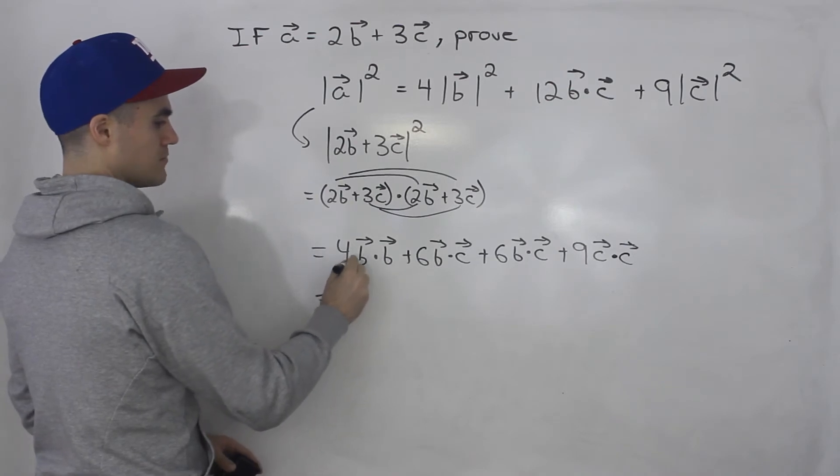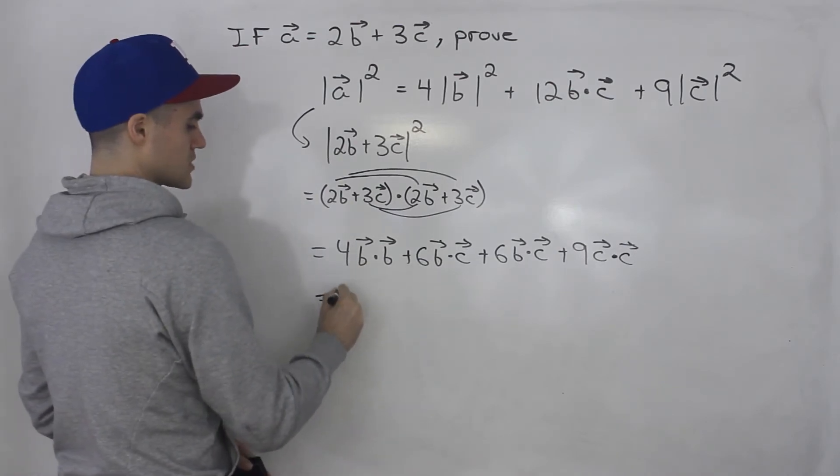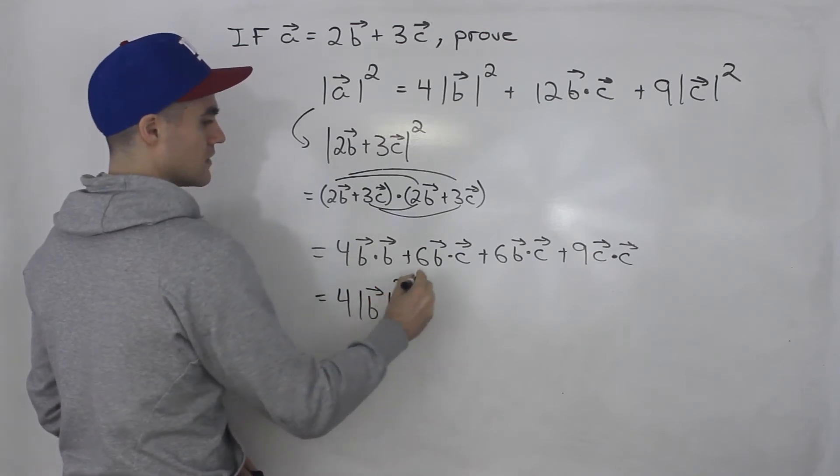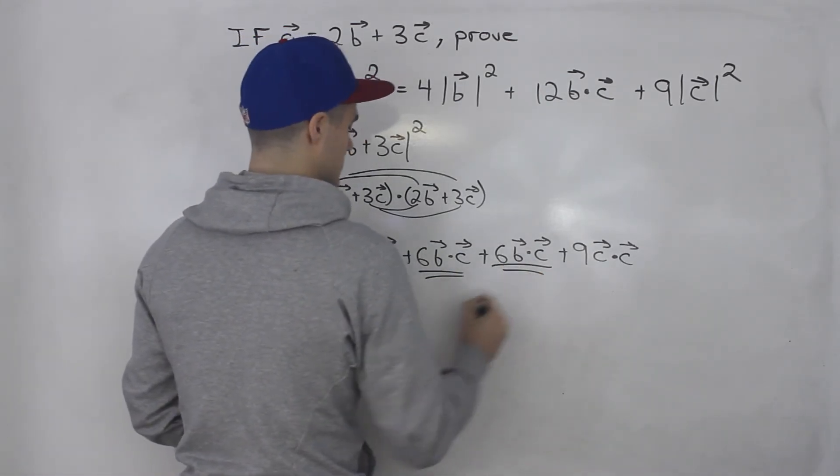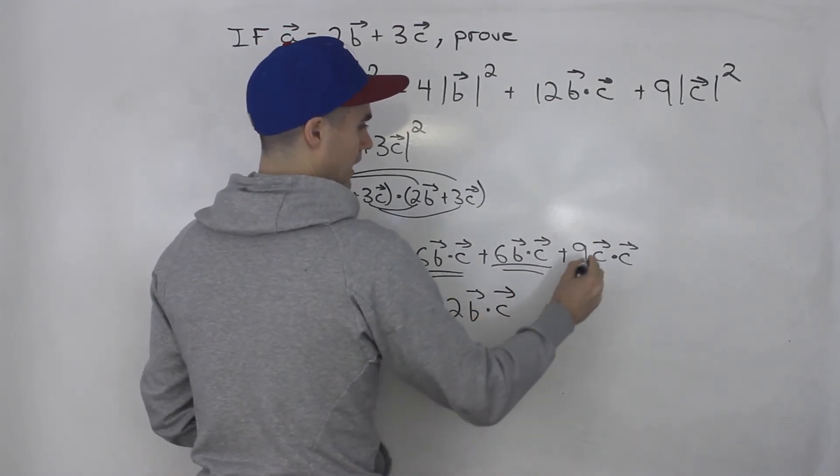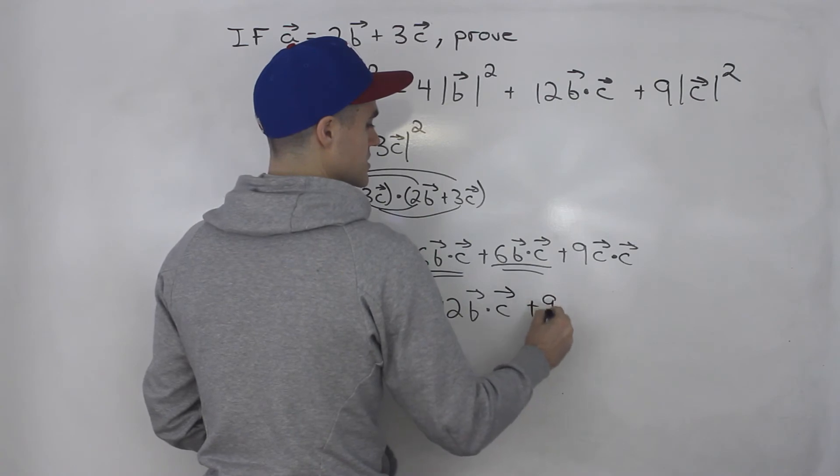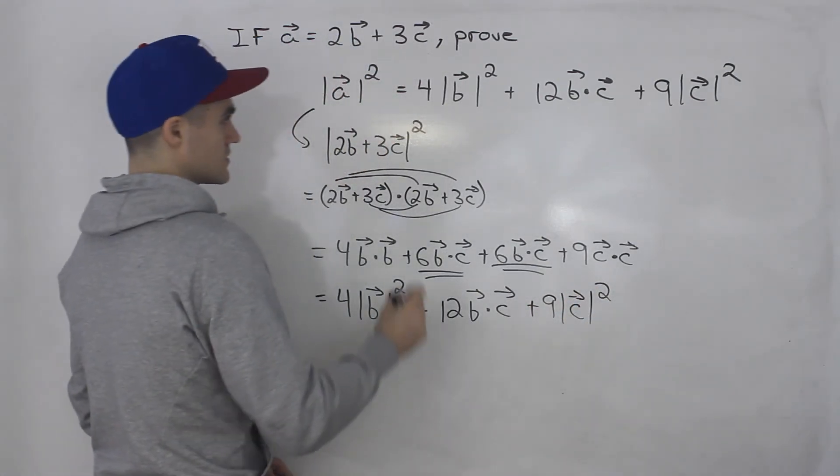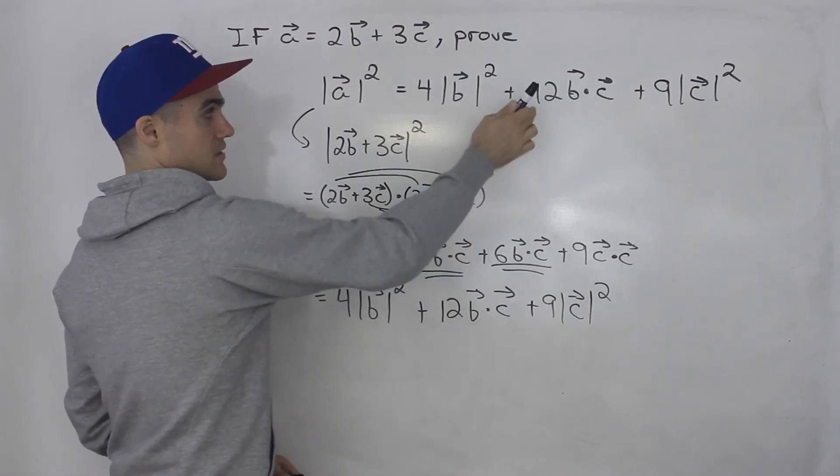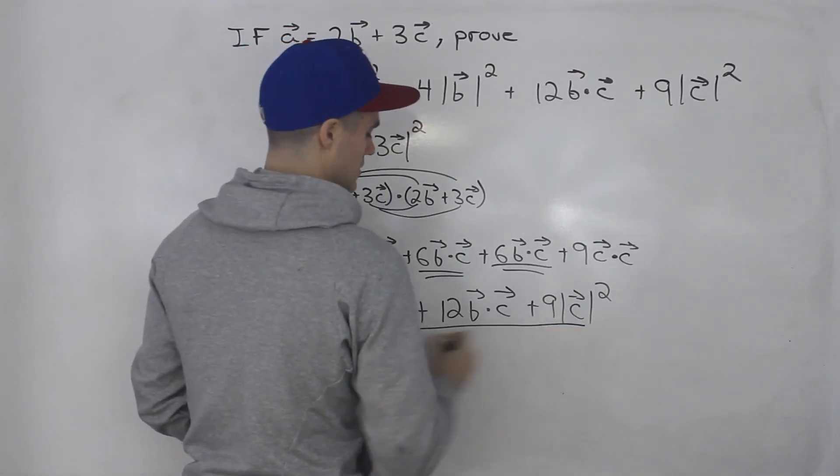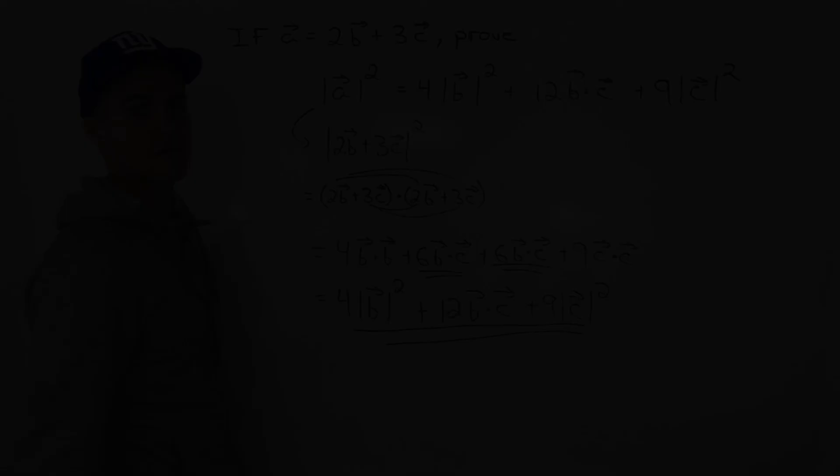So that would be 4 times the magnitude of b squared plus 12 b dot c, and then c dot c, that is just the magnitude of c squared. Notice that this is equal to that. So we took that left side, did some algebra, made it equal to the right side.